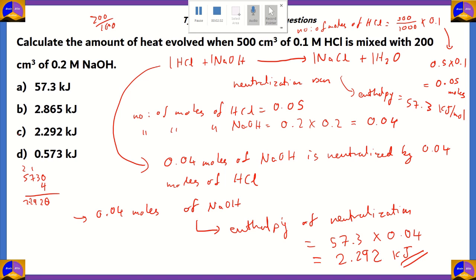So, 2.292 kJ turns out to be option C. The other options turn out to be incorrect. A would have been a strong contender. However, that's for one mole of NaOH. So, therefore, option C, 2.292 kJ turns out to be the right option.